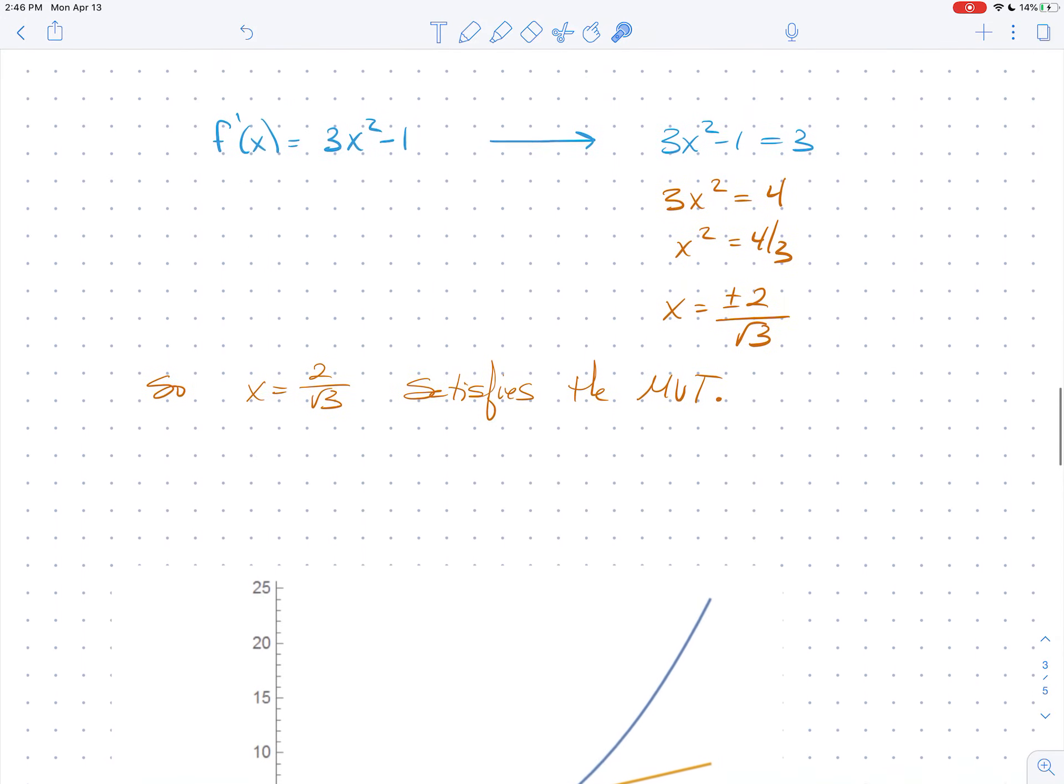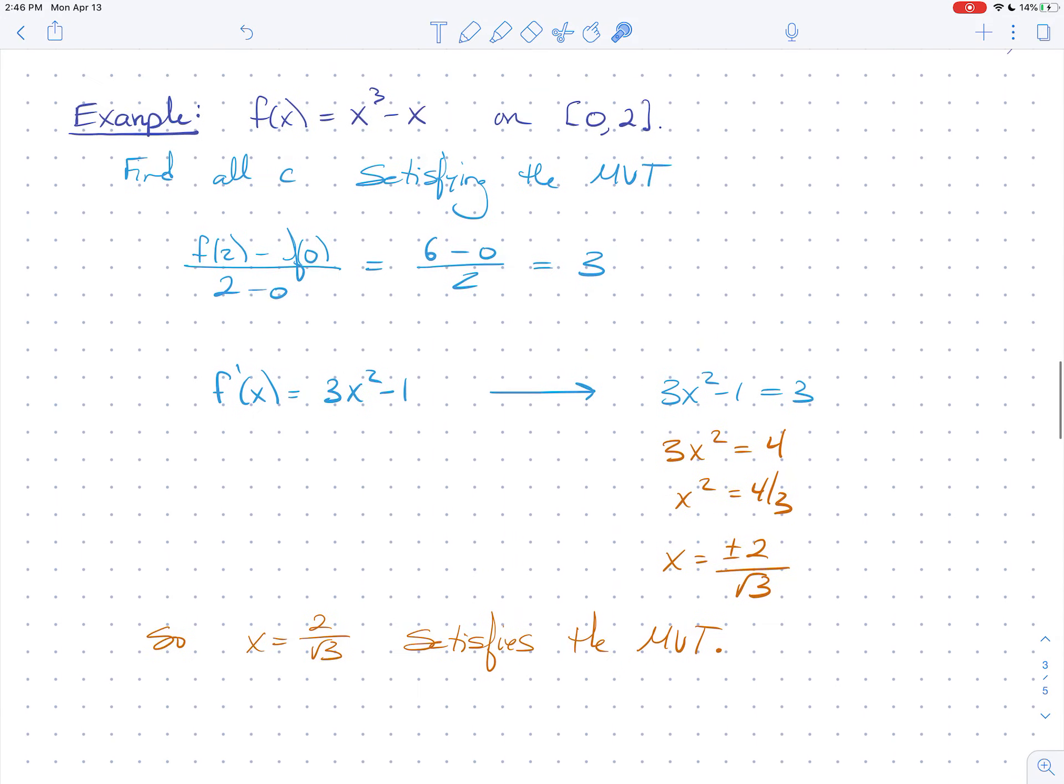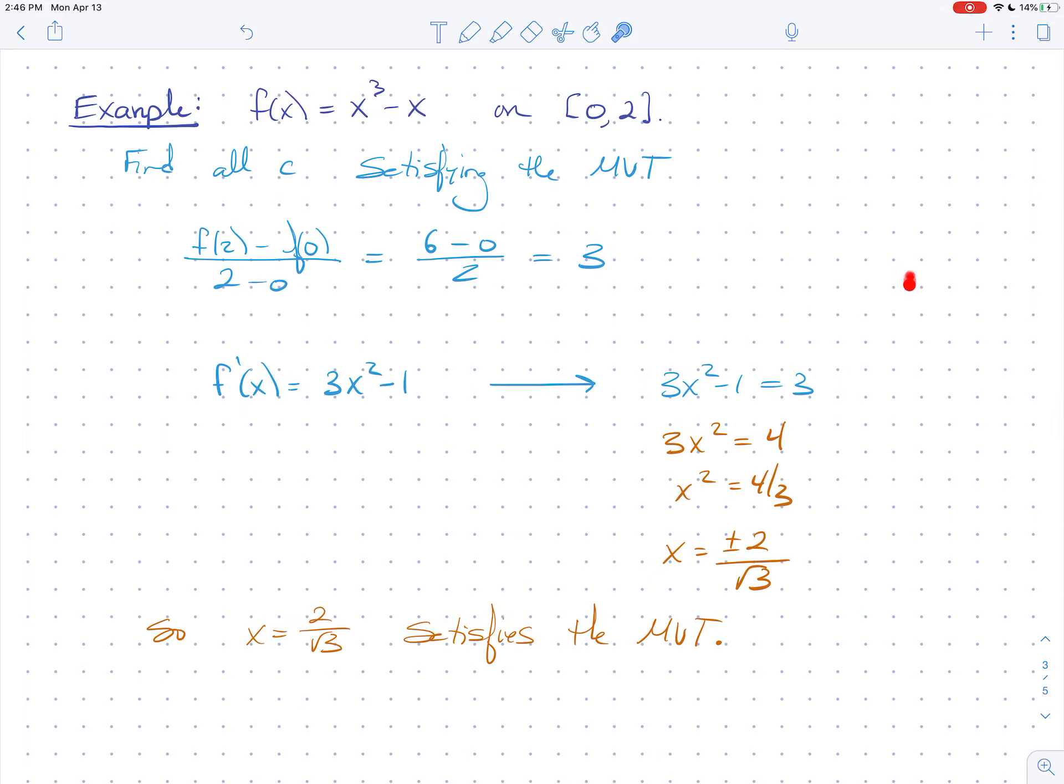So the mean value theorem works like a charm. So a lot of the homework in this section is going to be you guys doing problems like this finding points that either satisfy the mean value theorem or satisfying Rolle's theorem. And Rolle's theorem is even nicer. You just do the same thing. You solve for where is the derivative equal to 0 instead of the secant line. So you might realize that Rolle's theorem actually is just a special case of the mean value theorem.